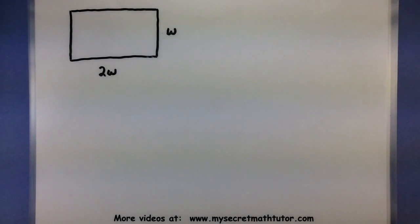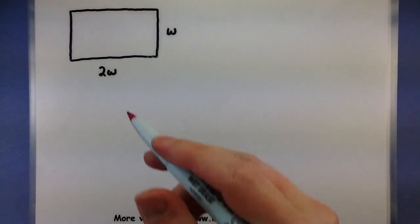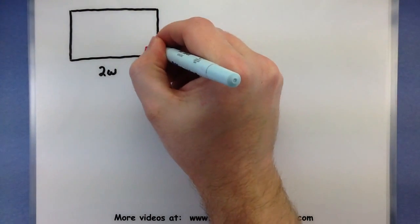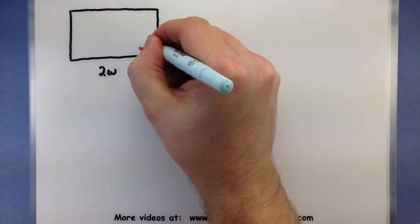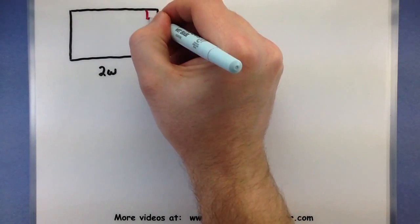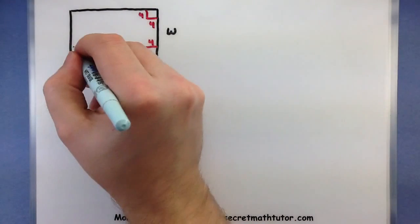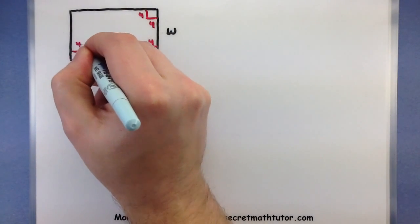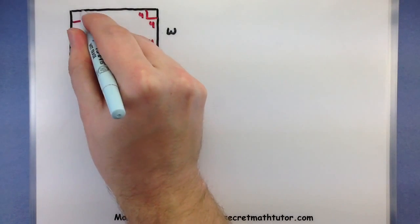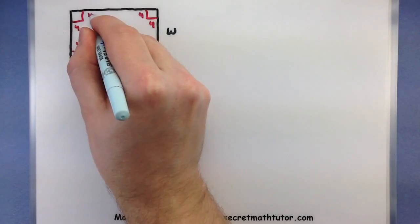Now what we'll do to this cardboard is cut little 4 centimeter squares out of each of the corners. So there's a little 4 centimeters, 4 centimeters out of that one. There's some more 4 centimeters out of that one. 4, 4, 4, and 4, and 4. Perfect.